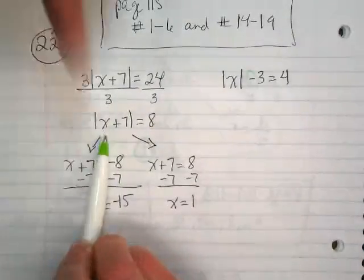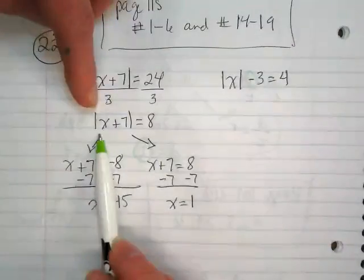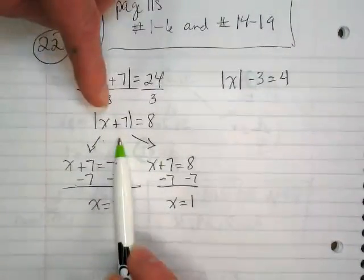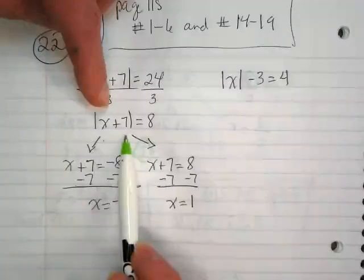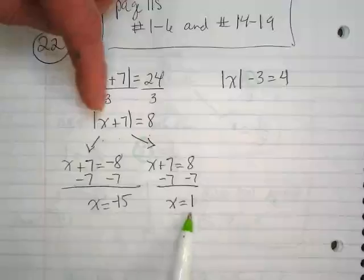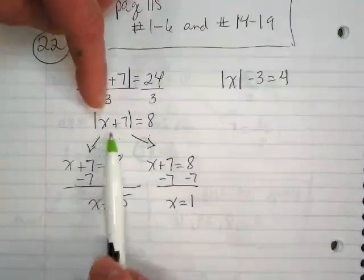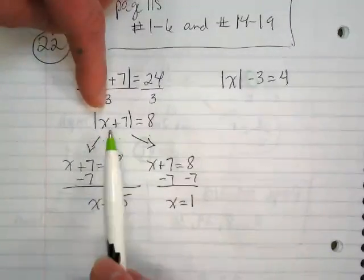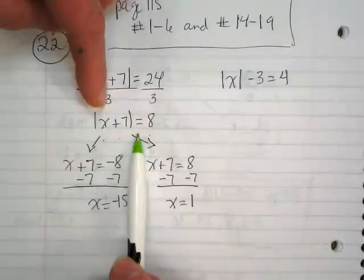I can go back to this equation here. Negative 15 plus 7 would be negative 8, and the absolute value of negative 8 is equal to 8. If I put the 1 in, I get 1 plus 7 equals 8, and the absolute value of 8 is also equal to 8.